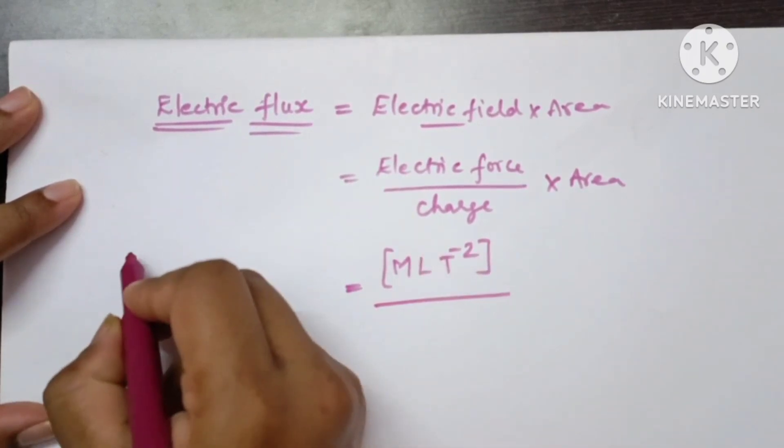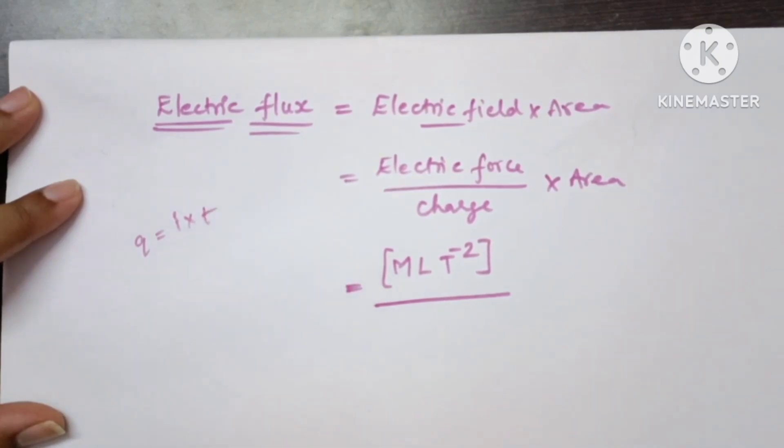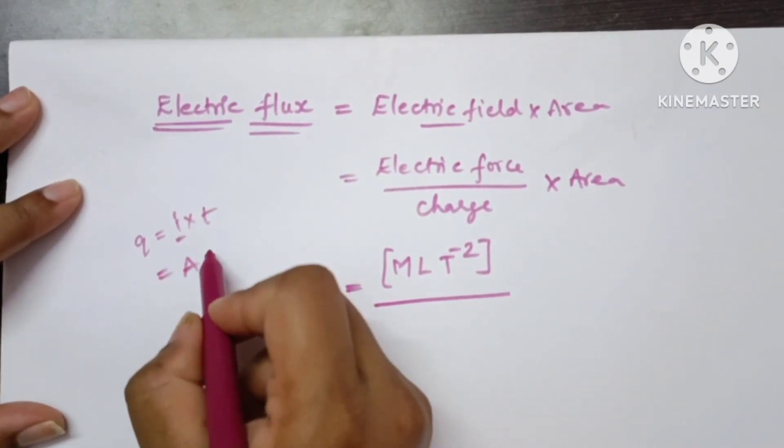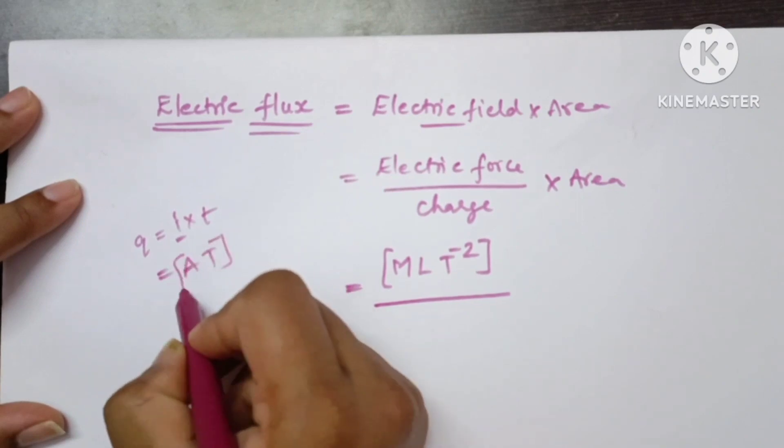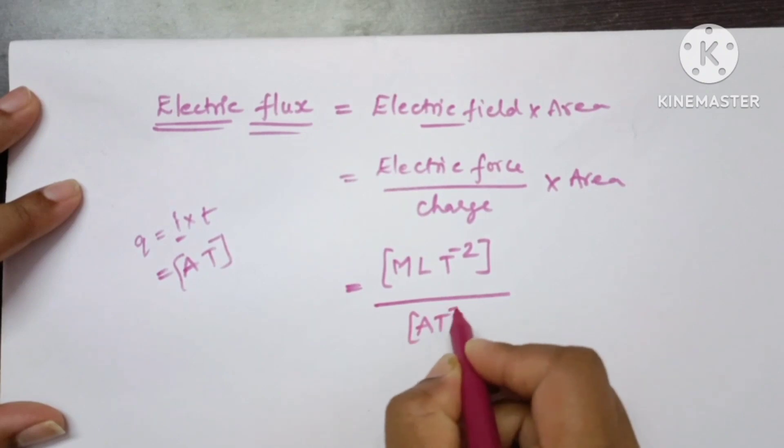And the dimensions of charge. We know that charge q equals i multiplied by t. So here current is represented with A and time is represented with capital T. So the dimensions of charge is AT.